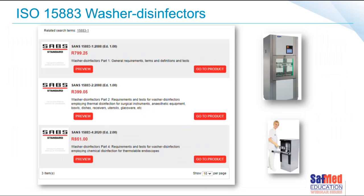You may say ISO is international — what about South Africa? South Africa has already adopted a number of the ISO 15883 guidelines. We have SANS 15883 part one, we've adopted part two for washer disinfectors, we've adopted part four for endoscopes, and we are in the process of adopting part three for bedpan washers.